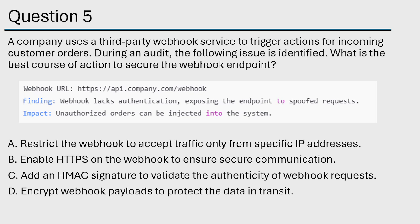C: Add an HMAC signature to validate the authenticity of the webhook request. That's a good answer. Do I like it better than A? I think I might. D: Encrypt the webhook payloads to protect the data in transit. That's like HTTPS — we're already using HTTPS, so if we're already using HTTPS, isn't it already protected in transit with encryption? That's an easy one to get rid of. So it's really between A and C.